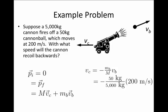Numerically, our answer is that the cannon's velocity will equal minus the ratio of 50 kilograms over 5,000 kilograms times 200 meters per second. This comes out to minus 2 meters per second, in other words a speed of about 6 feet per second moving to the left.